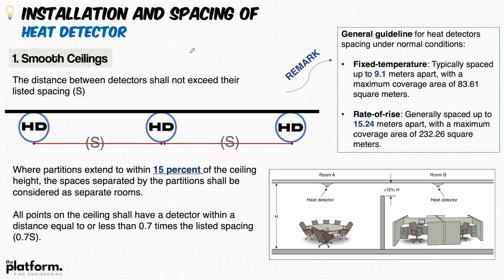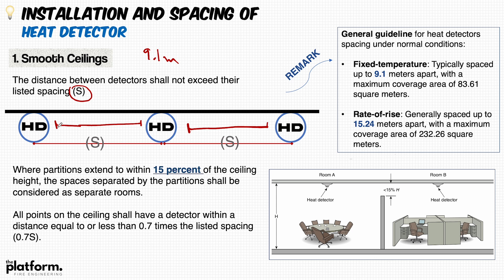Similar to smoke detectors, different ceiling types affect the spacing distances for heat detectors. The listed spacing for heat detectors — referring to a smooth ceiling as explained in lectures 4 and 5 for smoke detectors — is 9.1 meters between each heat detector.